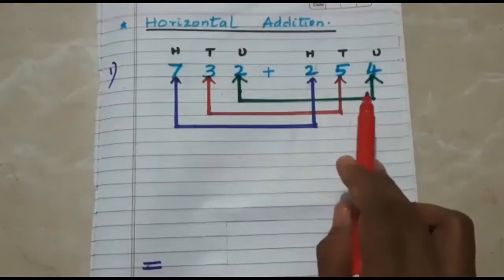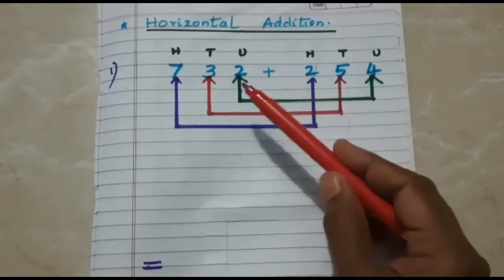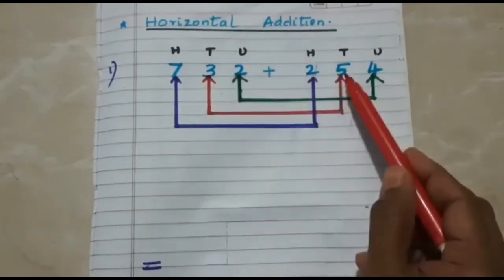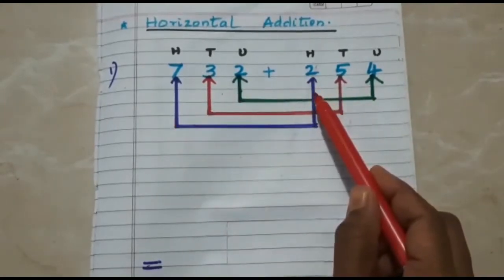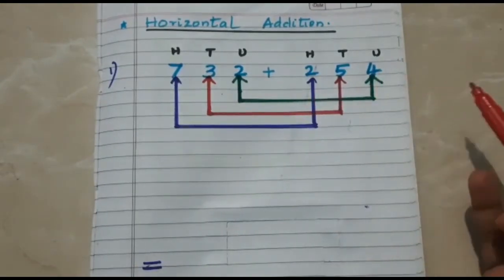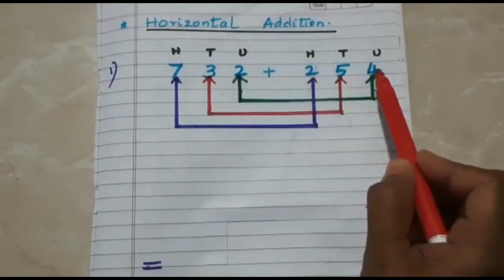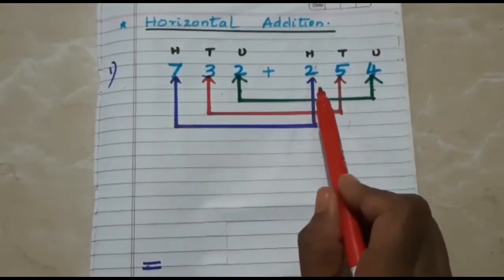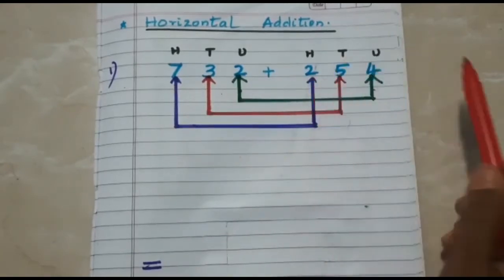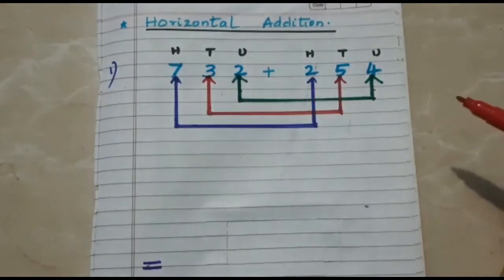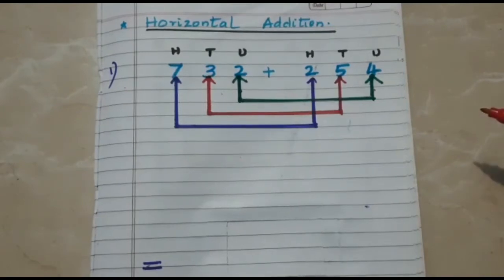I have written the place value so that it will be easier to carry out the horizontal addition. I have also put some arrow marks — I have paired units with units, tens with tens, and hundreds with hundreds. I am going to carry out the addition of units with units, tens with tens, and hundreds with hundreds. Whenever you carry out addition, whether horizontal or vertical, you must always start from the units place.